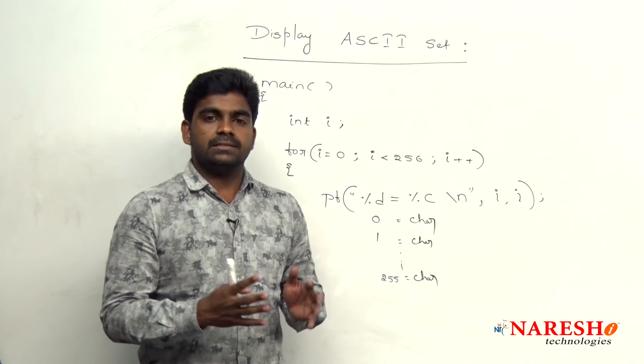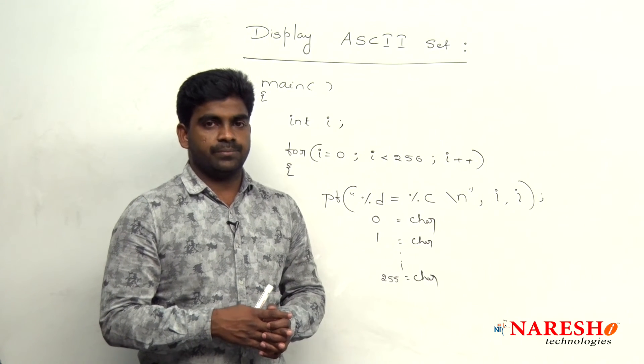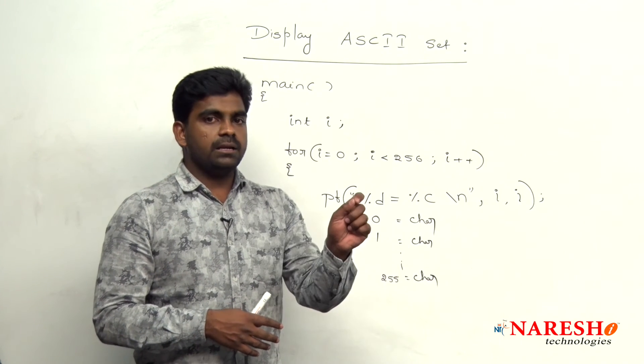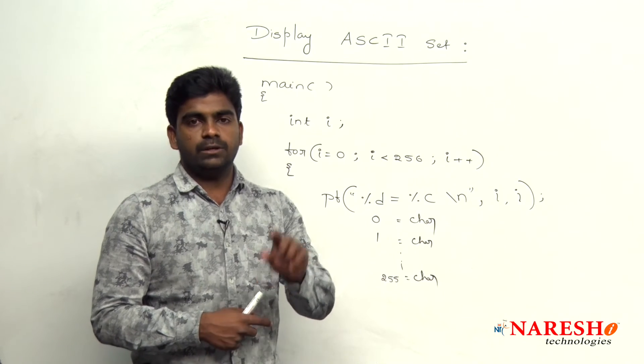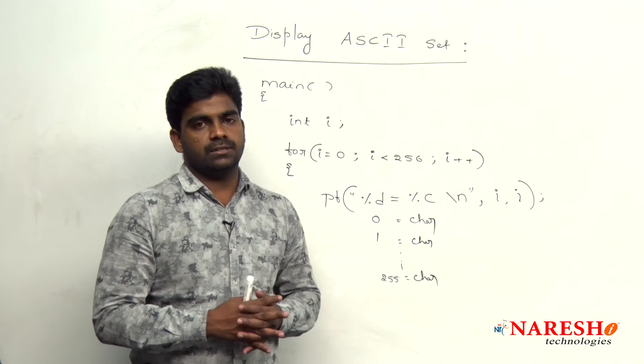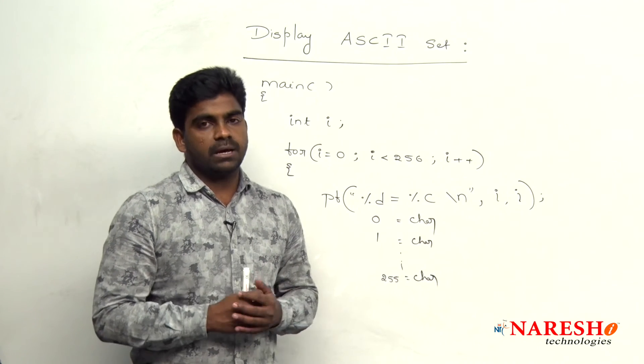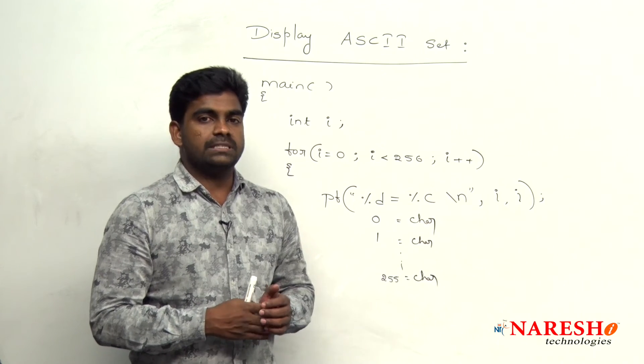Every language is not contains exactly 256 symbols, right? If the symbol is assigned with one integer value then it will show that character and integer value or else a question mark it will show.